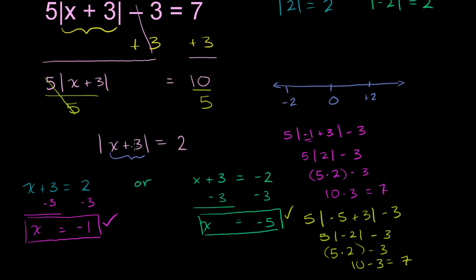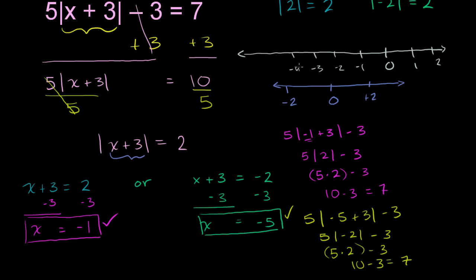If we were to graph the two solutions on a number line, both are less than 0. Drawing a number line with 0 on the right and marking negative 1 through negative 6 to the left, the solution x equals negative 1 is plotted right there, and the other solution x equals negative 5 is plotted further to the left. Hopefully you found that enjoyable.